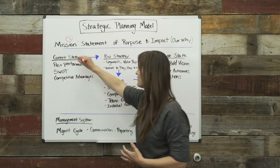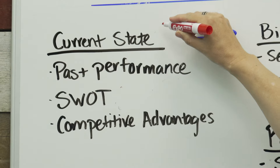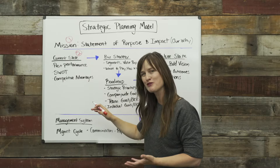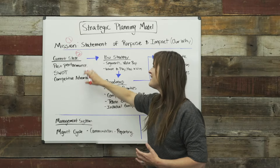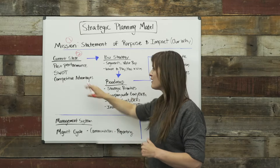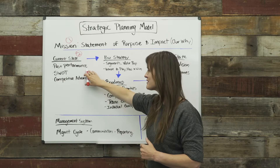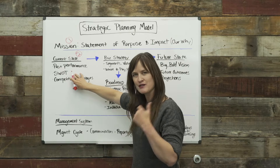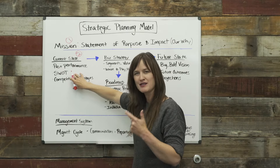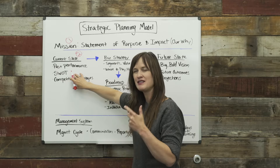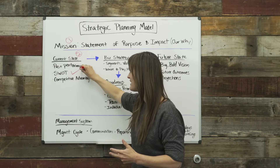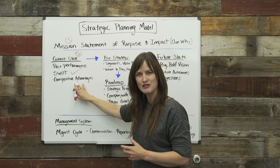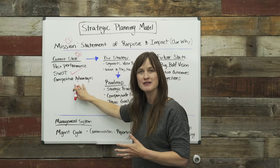Where are we now is our current state. It's probably the second thing you would do if you're walking through a process from scratch. In your current state, you're going to look back on past performance. You're going to do a quick summary of strengths, weaknesses, opportunities, and threats — that would be your SWOT. And that's going to help you unpack your competitive advantages, what you're best at.